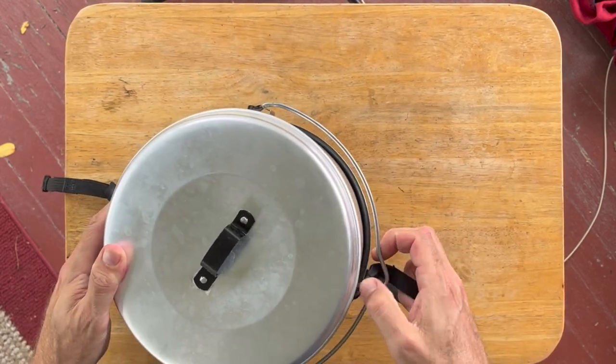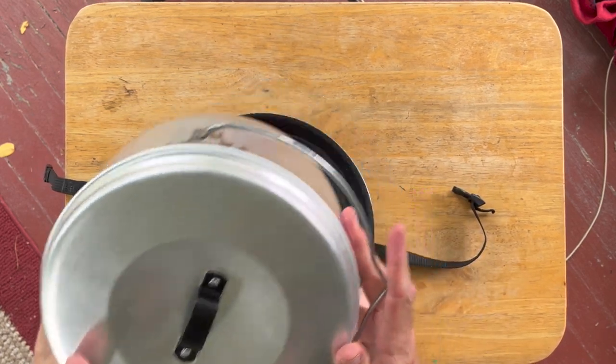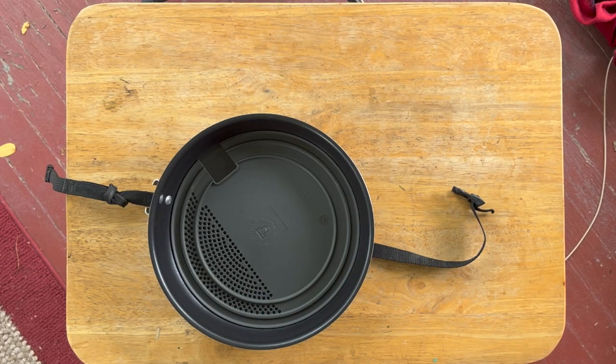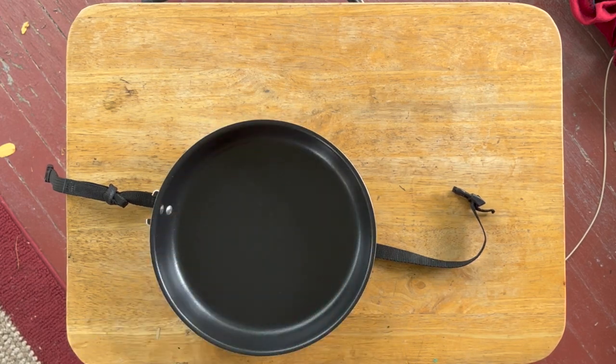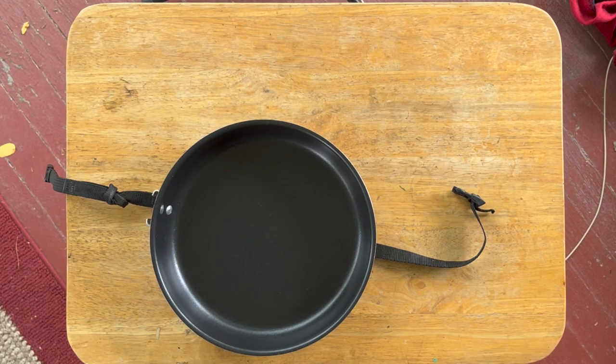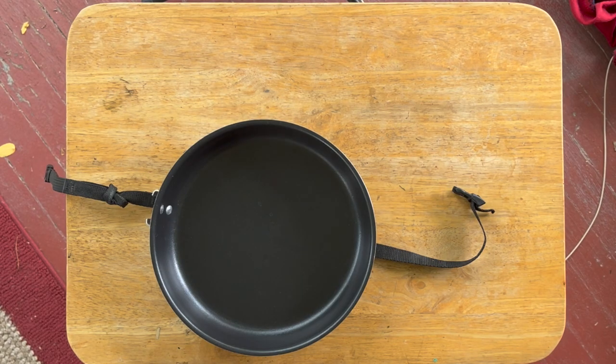So once I figure out how to get off this strap there, there's my skillet with that cutting board there and strainer that comes with the set. And so I've got the skillet there.